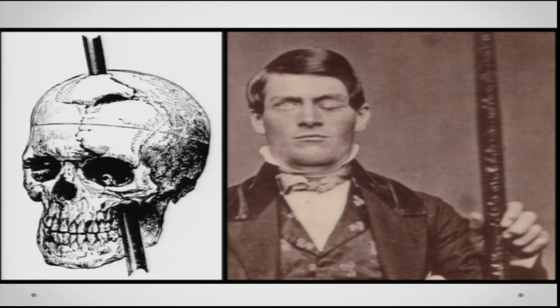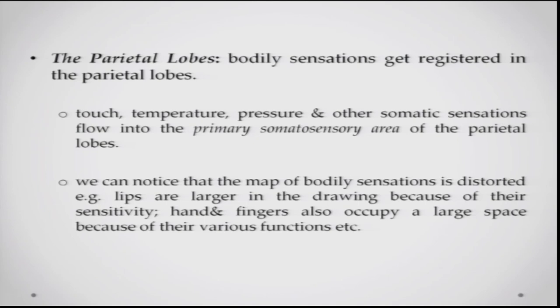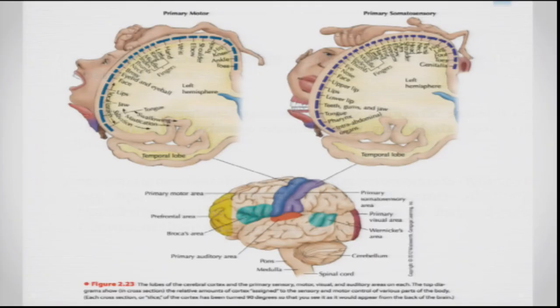The parietal lobes register bodily sensations received from the sensory areas of the body — touch, temperature, pressure, and other somatic sensations — flowing into the primary somatosensory area in the parietal lobes. The homunculus map of bodily sensations is distorted: lips are larger due to their higher sensitivity, and hands and fingers occupy a large space because of the variety of functions they perform.